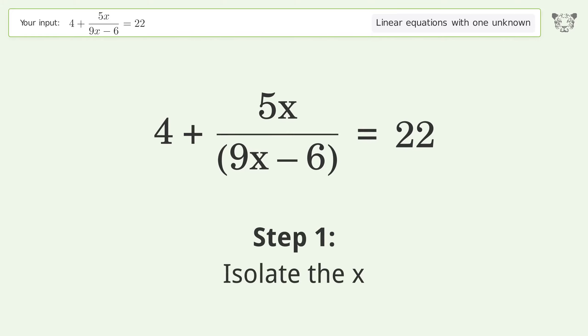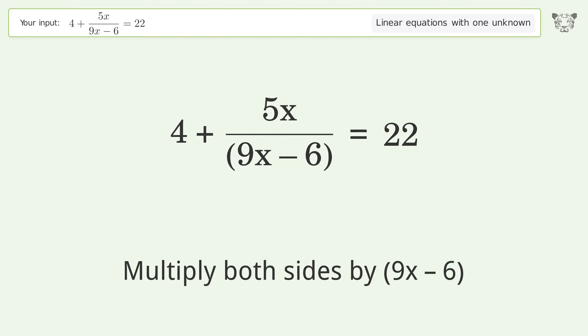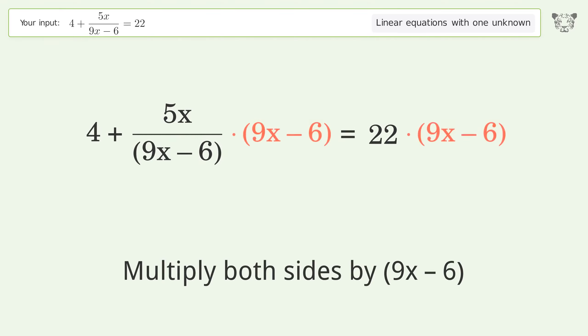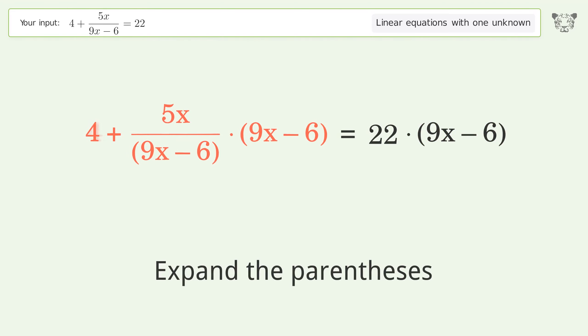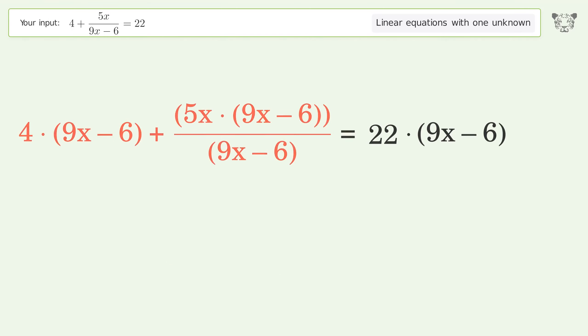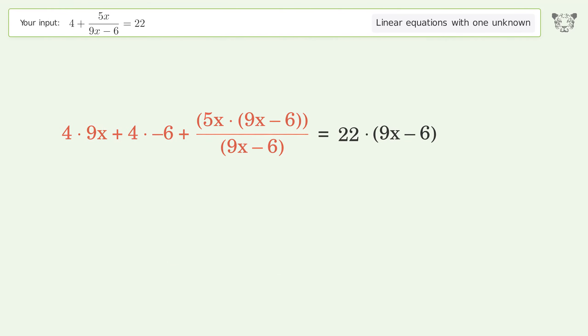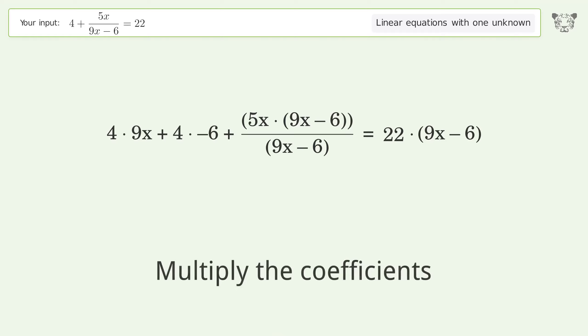Isolate the x. Multiply both sides by 9x minus 6. Expand the parentheses. Multiply the coefficients.